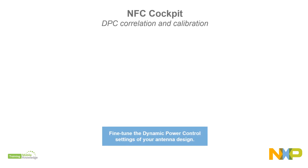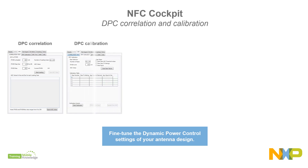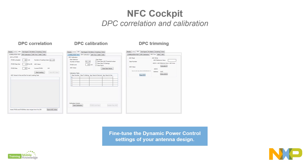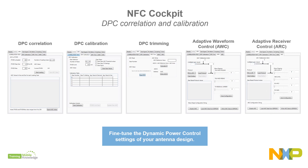This UI supports the entire process, starting from the DPC correlation test with different types of loads, the DPC calibration to control the field strength according to the loading conditions, the DPC trimming to compensate production tolerances between devices, the adaptive waveform control to optimize the transmitter pulse shapes, and the adaptive receiver control to optimize the receiver settings.